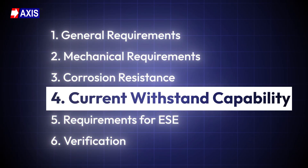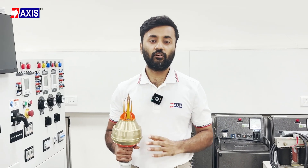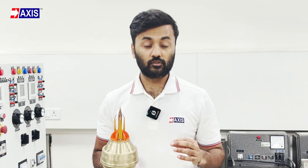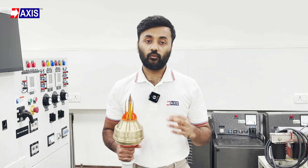Fourth, current withstand capability: this test ensures the arrester can survive a real lightning strike. They create a test current that acts like lightning — it rises very fast within 10 microseconds and reaches up to 100 kiloamperes, then slowly fades over 350 microseconds. The arrester is hit with this current three times. If it keeps working after all three, it passes the test. After the test, it must not have any damage or holes — burn marks on the surface are acceptable. These checks prove that the arrester can carry real lightning current without failing.